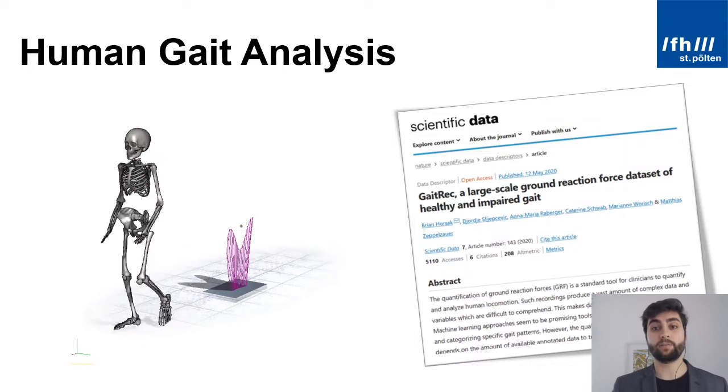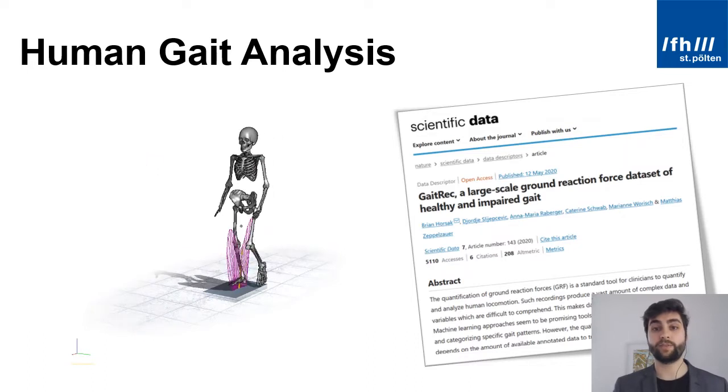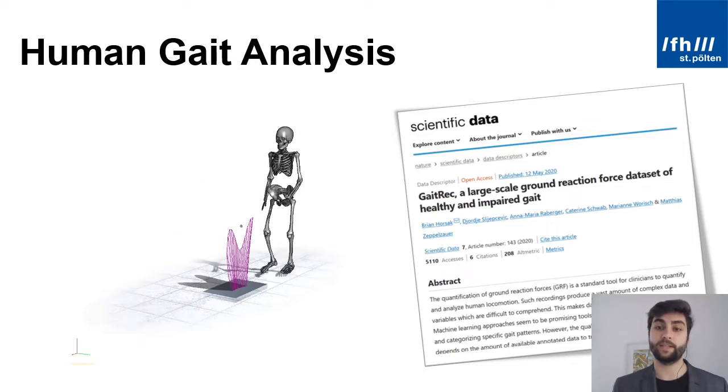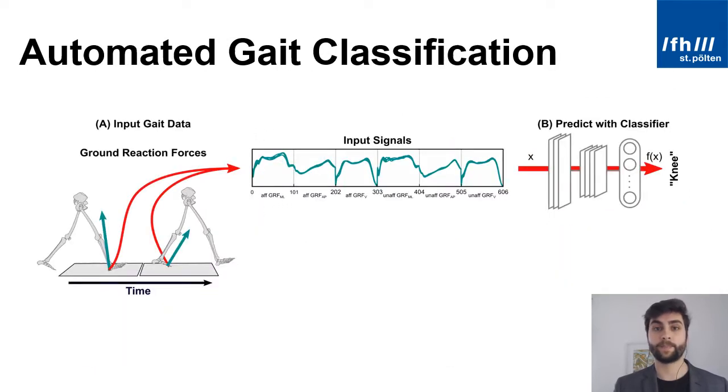This data set comprises ground reaction force data of healthy controls and patients with functional gait disorders at the knee, hip and ankle. We developed machine learning models to classify these data and thereby automatically identify the area where a functional gait disorder occurs.